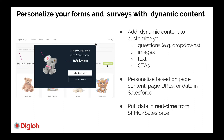For example, if they're on a stuffed animal toy page, you're showing a stuffed animal quiz. You can also personalize based on a URL parameter or a data field in Sales Cloud or Marketing Cloud. If there's a specific data field you want to target based on data in Sales Cloud, we can show a specific survey to those people on your website in real time.